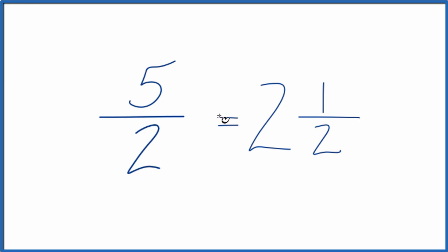And we've converted 5 over 2 to a mixed number, 2 and 1 half. This is a mixed fraction.